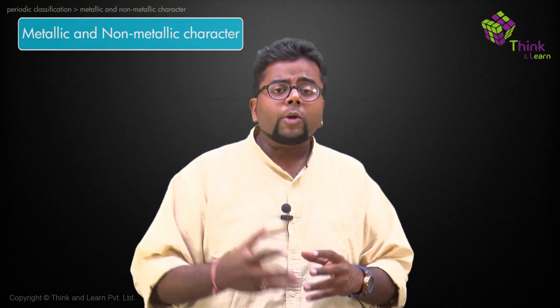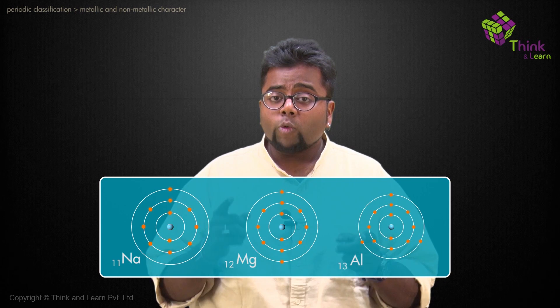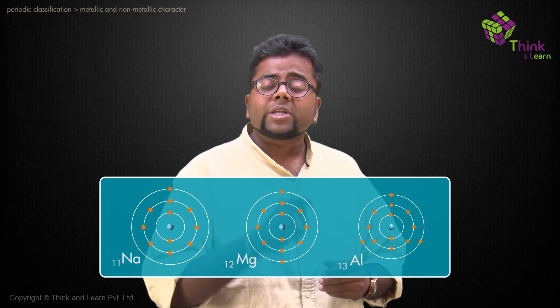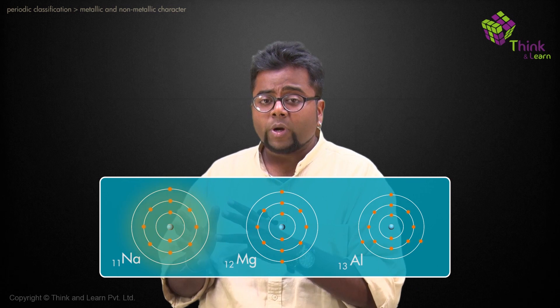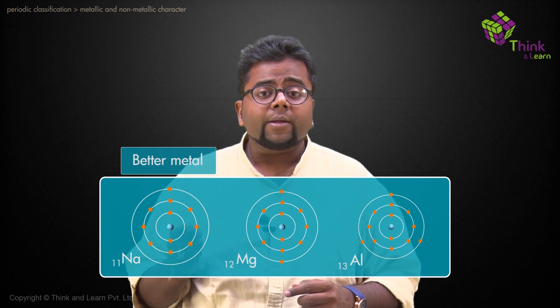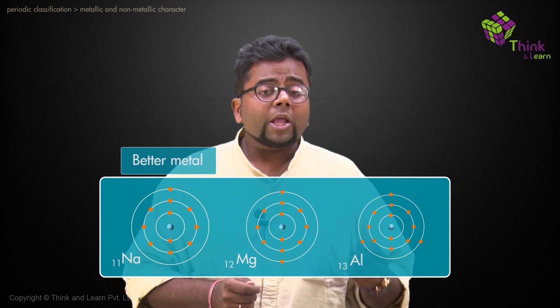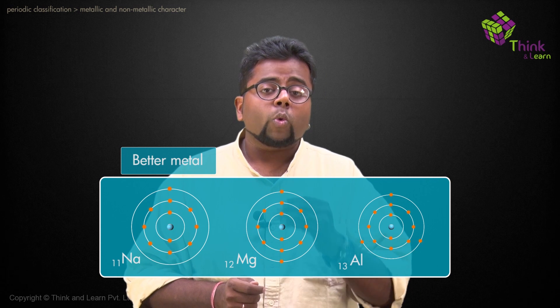For metallic and non-metallic character, we judge which element is a good metal by how easily it removes an electron — not by how many electrons it releases. For example, among sodium, magnesium, and aluminium, sodium removes its first electron most easily, so sodium is a better metal than aluminium, even though aluminium can remove three electrons.